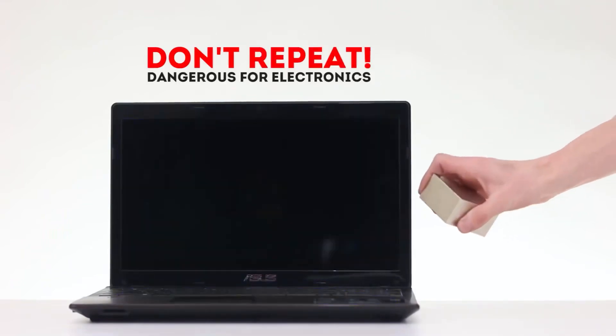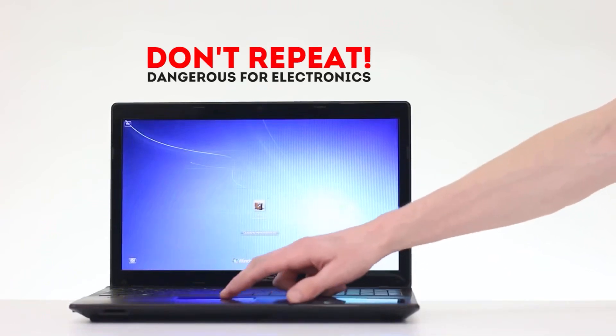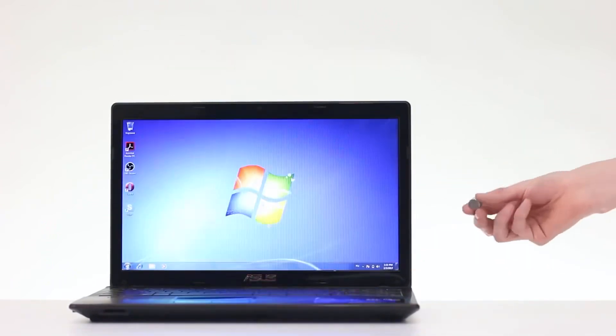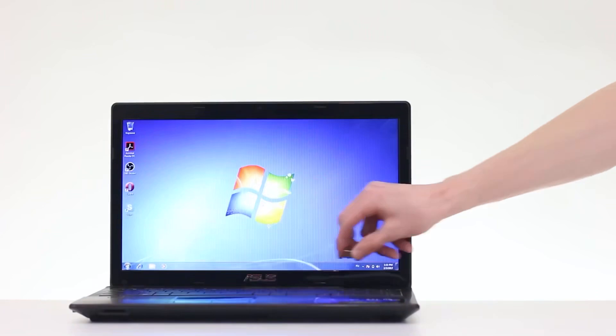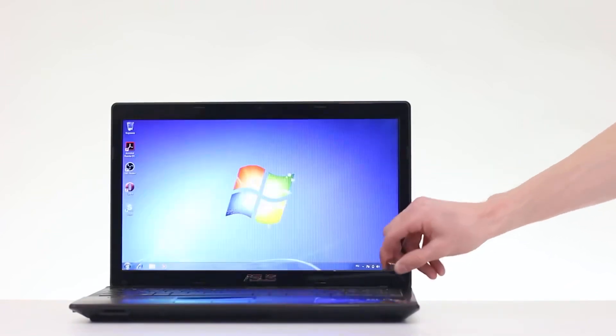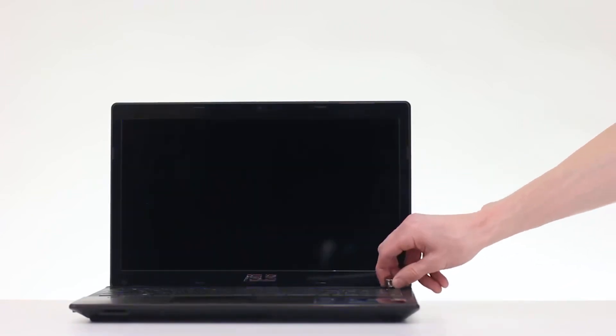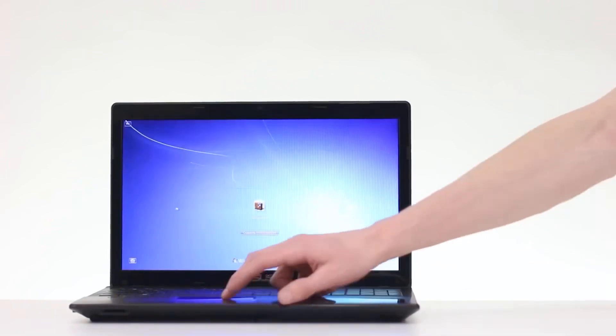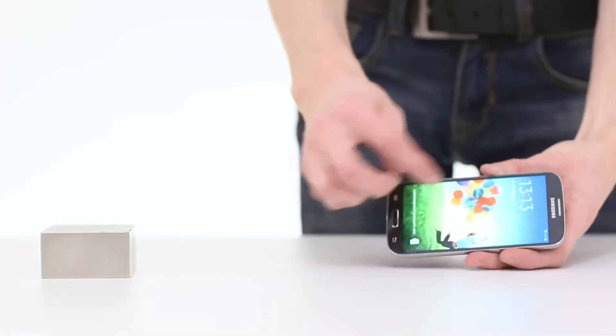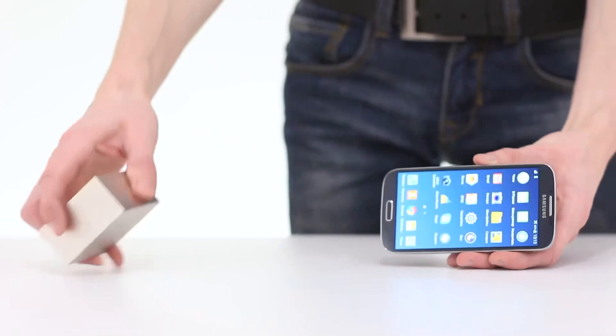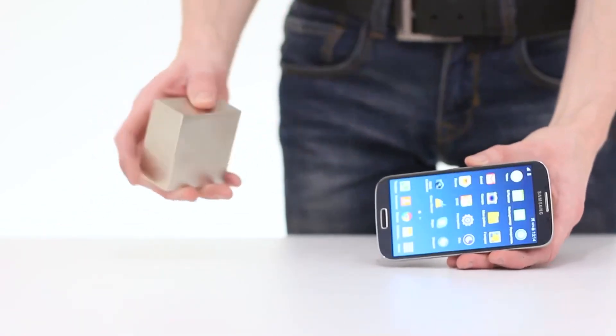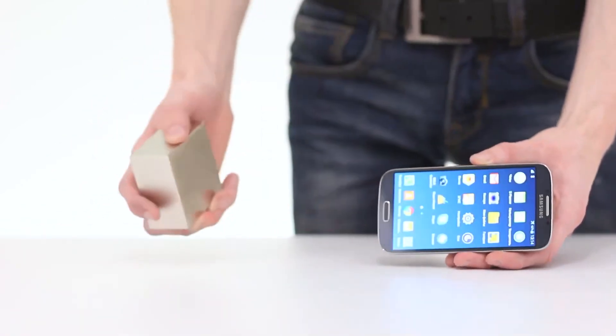We do not recommend repeating this trick at home. We will bring the magnet to the laptop screen, and it immediately goes out. Even a small magnet is enough, but remember that it can end badly for technology. Mysterious things also happen to a smartphone. When a magnet approaches, the screen goes out and lights up again.